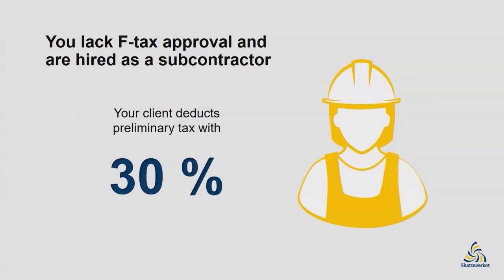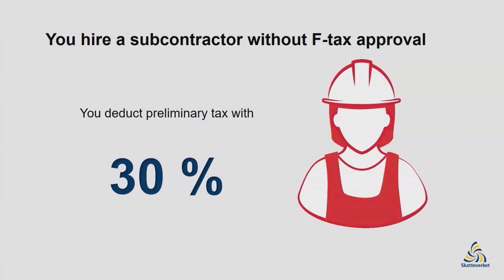What should you do if you hire a subcontractor to do the work for your company? If your subcontractor is not approved for F-tax, the location where the work is carried out determines whether or not you need to deduct preliminary tax. You should normally deduct preliminary tax at the rate of 30 percent on payments relating to compensation for work carried out in Sweden. The rules apply regardless of whether the compensation is for outsourced labour or other compensation for work in Sweden.